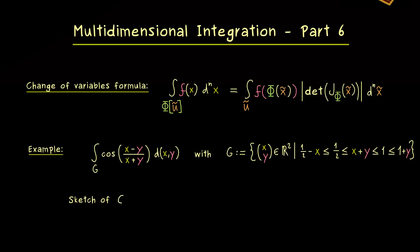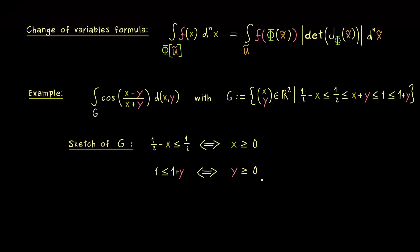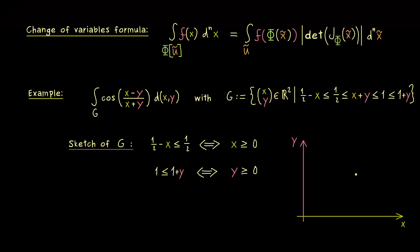I recommend sketching the domain g first. The easiest inequalities are the outermost ones — they look complicated but are quite simple. Pulling 1/2 to the other side shows that x is greater than or equal to 0, and similarly y is greater than or equal to 0. This means everything happens in the first quadrant of the xy-plane, so we only consider non-negative x and y values. Now we can consider the two middle inequalities: 1/2 ≤ x + y ≤ 1.